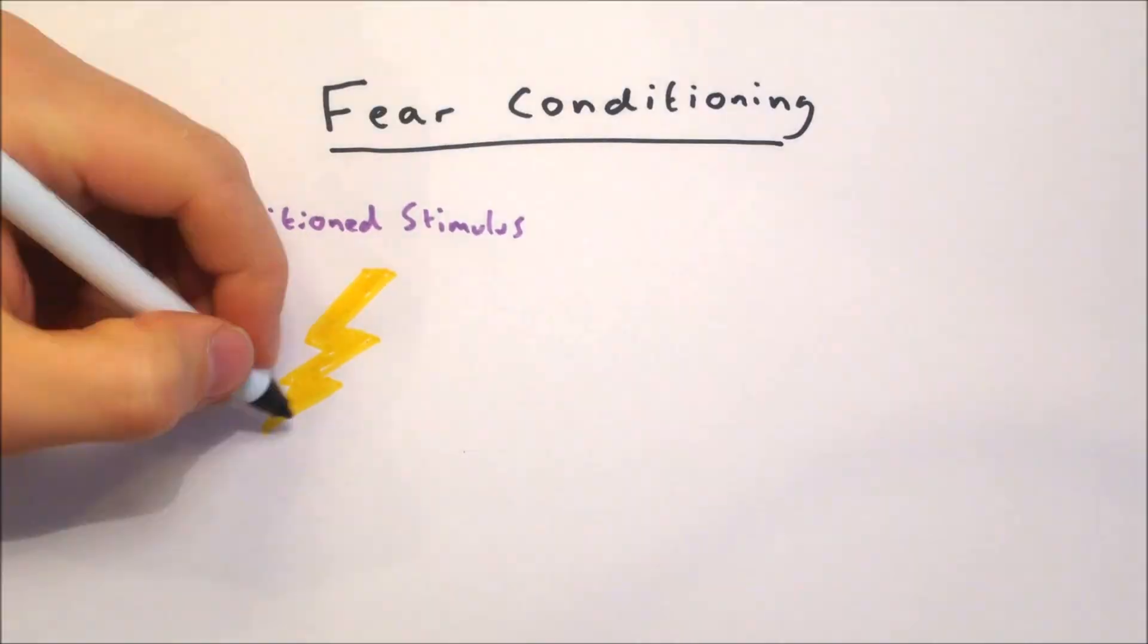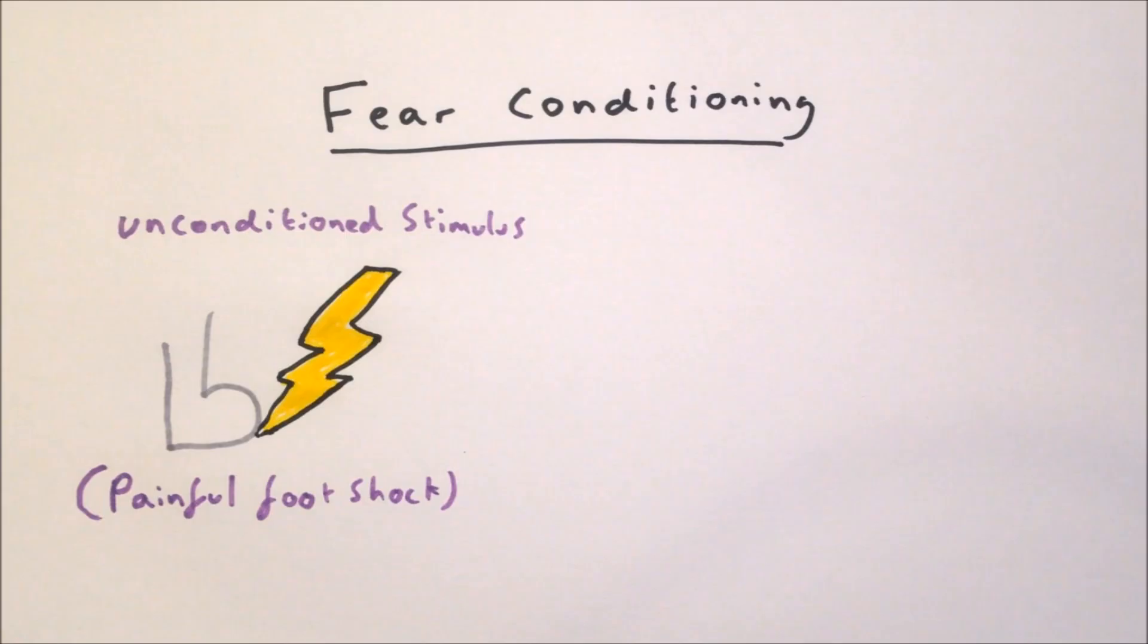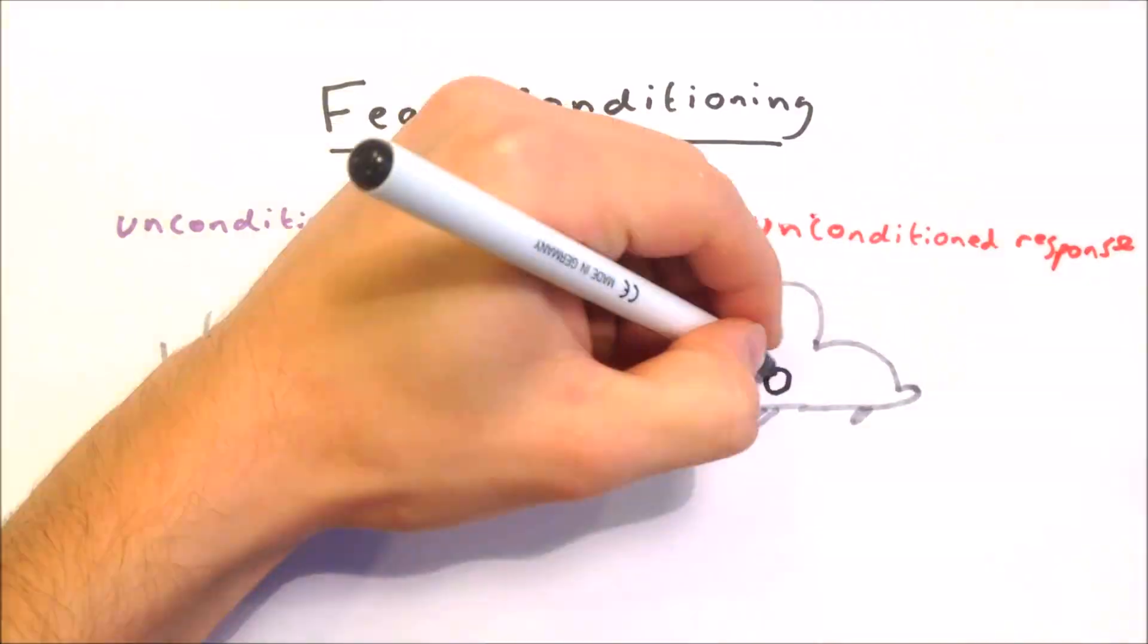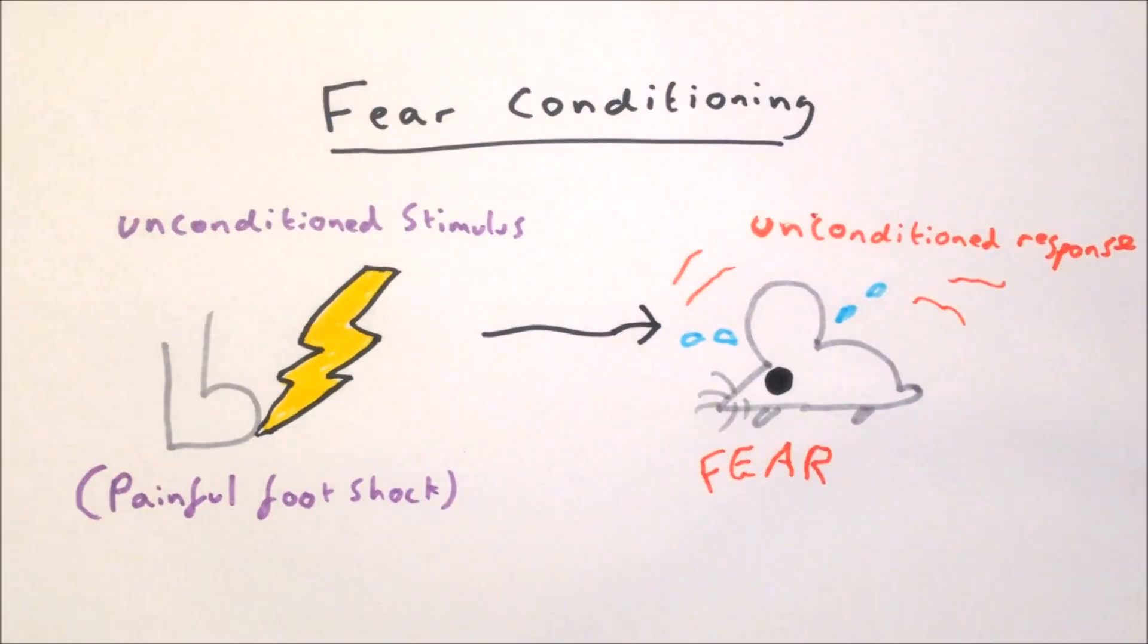In a typical fear conditioning experiment, a mouse is given an unconditioned stimulus, which is inherently negative, such as a painful foot shock, which causes a natural, unconditioned response. In this case, the expression of fear.